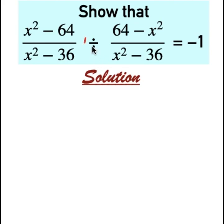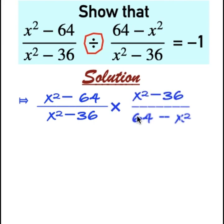First off, change the division sign to multiplication sign and turn this fraction upside down. That is x squared minus 64 over x squared minus 36 times x squared minus 36 over 64 minus x squared.